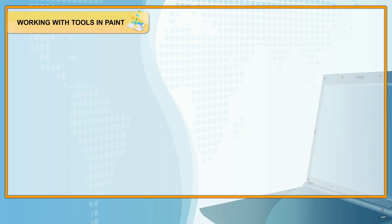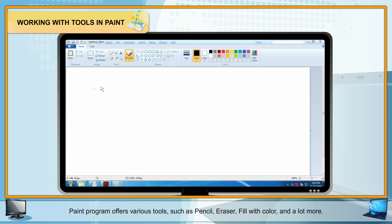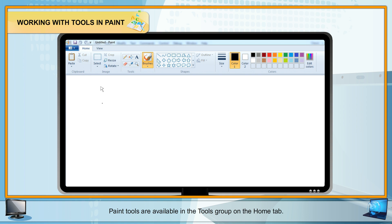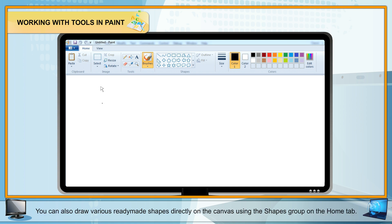Working with Tools in Paint: Paint program offers various tools such as pencil, eraser, fill with color, and a lot more. These tools let users draw and color a picture. Paint tools are available in the Tools group on the Home tab. You can also draw various ready-made shapes directly on the canvas using the Shapes group on the Home tab.